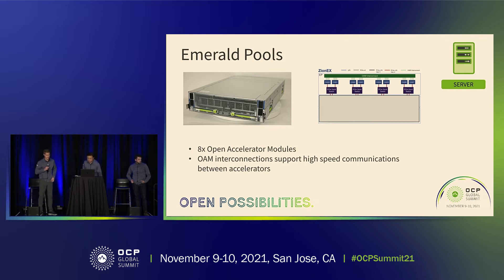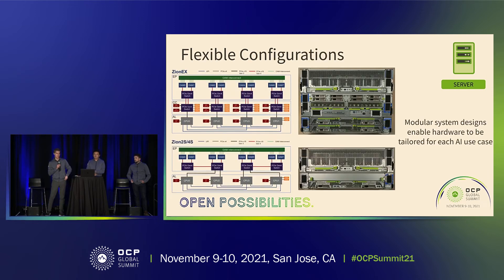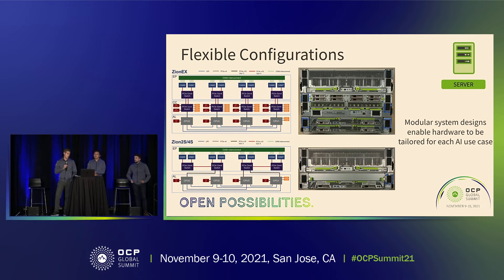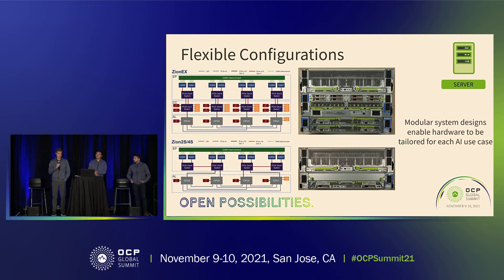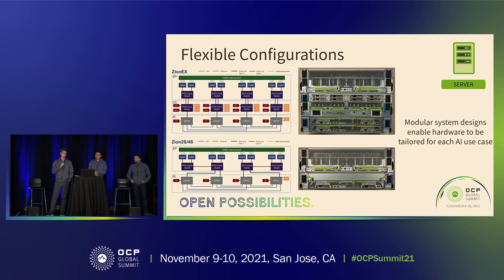Thank you. I'm Michael Hagen, a mechanical engineer at Meta. Two key objectives motivated the design decisions around Zion. First, flexibility through modularity: we can combine Angel's Landing directly to Emerald Pools — a two- or four-socket head node attached to the eight-OAM Emerald Pools box — which is good for scale-up AI workloads. Or we can add the Clear Creek expander box in the middle to pool GPU resources into a much larger shared pool. In all configurations, Emerald Pools and Angel's Landing subsystems remain the same, allowing design reuse.